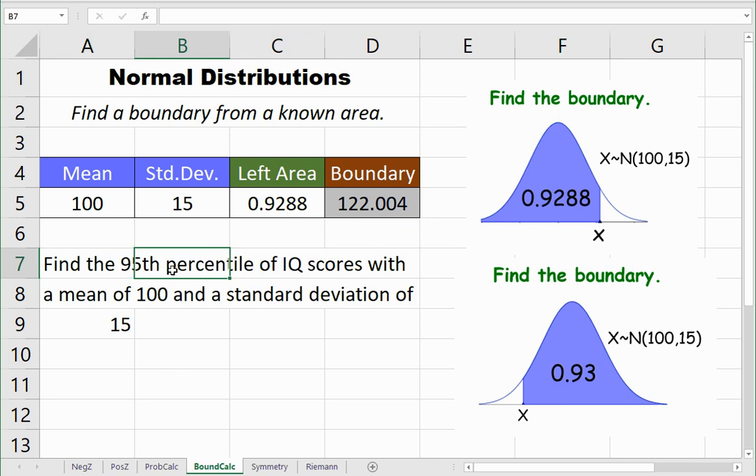It says find the 95th percentile. Remember, a percentile is an actual divider, and that would be your x score you're looking for. The 95th percentile divides the lower 95%. So my left area should be 0.95, and then I get the answer of 124.673. An IQ score of about 125 is the dividing line between 95% of the population and the upper 5%. That means 95% of the population have an IQ score less than 125, and 5% of the population has an IQ score greater than 125.